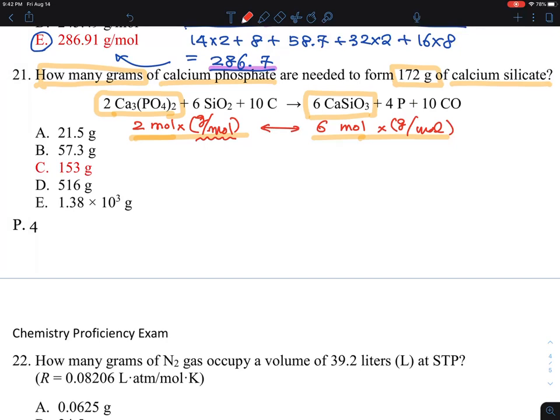So this one means calcium, which is 40, and there are 3 of them. And phosphorus, which is 31, there are 2 of them. And oxygen, which is 16, there are 8 of them. By doing so, this is 310 gram per mole for this compound called calcium phosphate.